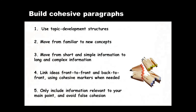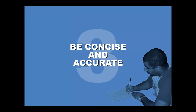Once you've written clear sentences and cohesive paragraphs, take time to review your work. Proofread to make sure you've been concise, so that every word counts, and accurate, so that sentences contain correct punctuation, spelling, referencing, and grammar. We'll start by looking at some sentences that aren't concise. As you read each one, think about how to trim words and tighten expression. Pause the video if you need to.